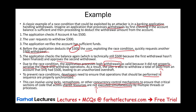A real-world example of race conditions is hotel or airline seat reservations. The system tells you a seat is available, but by the time you complete the reservation, it's no longer available because another thread claimed it simultaneously. When the system works properly, as soon as that seat or room is taken, no one else can reserve it. If it doesn't, the same seat or room could be booked more than once.